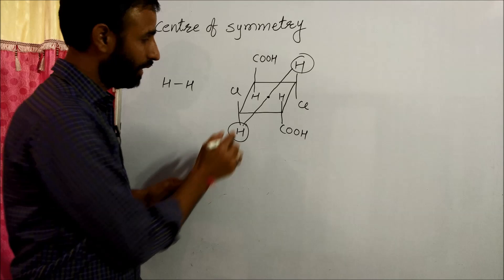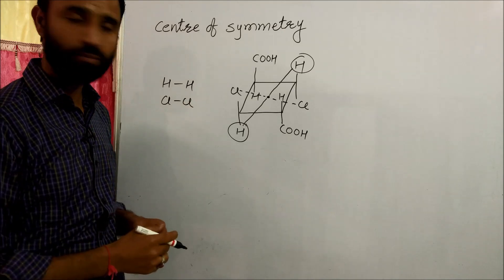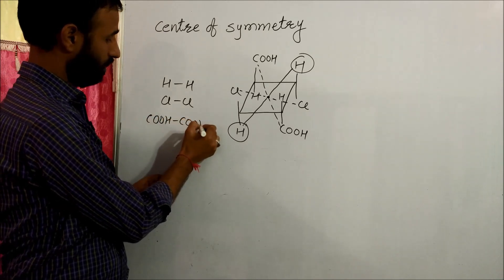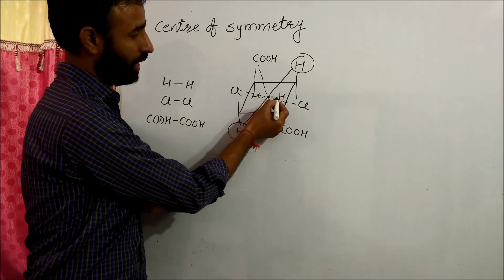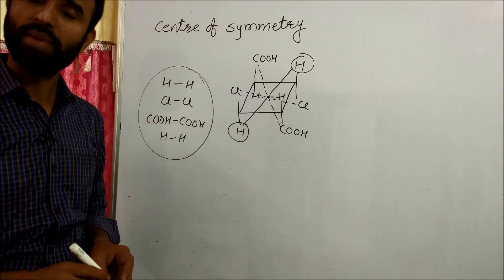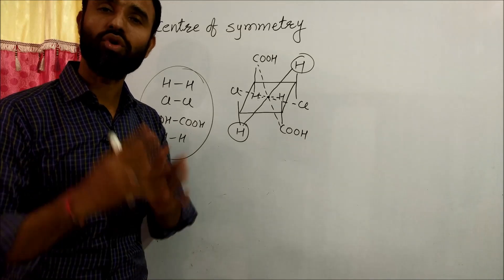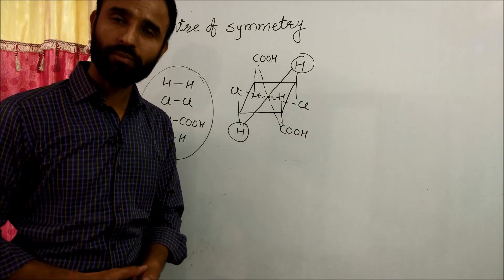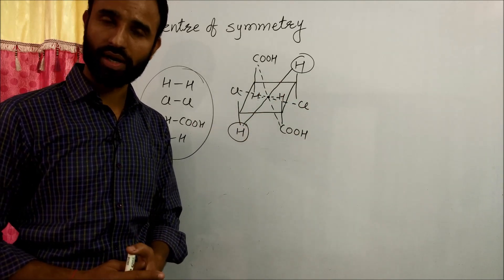H and H are symmetrical; Cl and Cl are symmetrical; COOH and COOH are symmetrical — they are all symmetrical about the central point. So this molecule is said to have a center of symmetry and is optically inactive. Usually, center of symmetry exists in molecules which have an even number of carbon atoms in the ring.